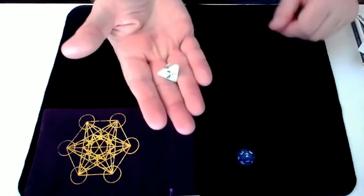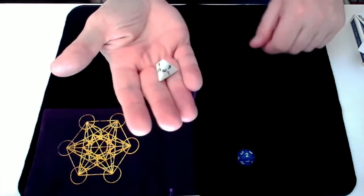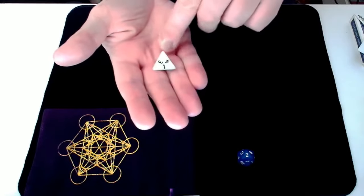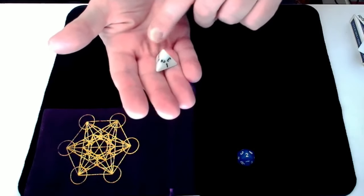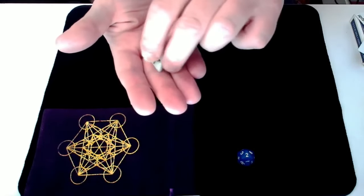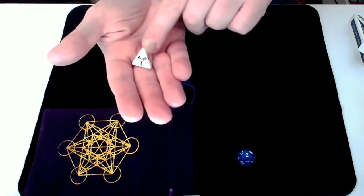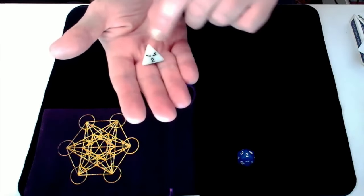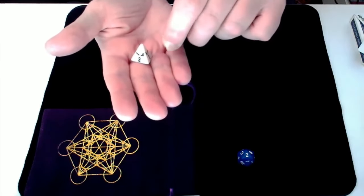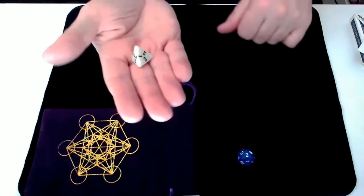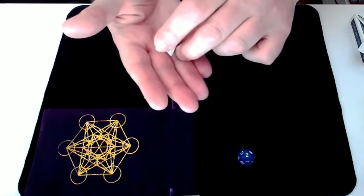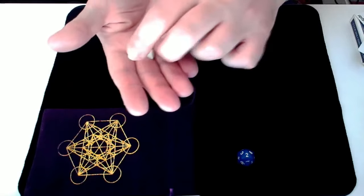And next we need the suit of our card. And we've got a 4-sided dice here that we'll use. And if you've never seen a 4-sided dice before, the way you read it is it's the number on the bottom. So if we roll a 1, that will be clubs. 2 will be hearts. 3 will be spades. And 4 will be diamonds.